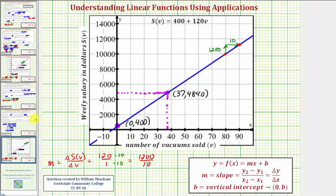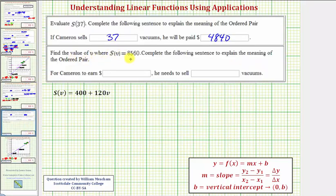And for the last question, we want to find the value of V where S(V) = 8,560. So notice here, we're given the function value of the output, we're determining the value of the input V. So here we'll substitute 8,560 for S(V) and solve for V. So we'd have 8,560 = 400 + 120V. So we'll solve this equation for V. We'll first subtract 400 on both sides.